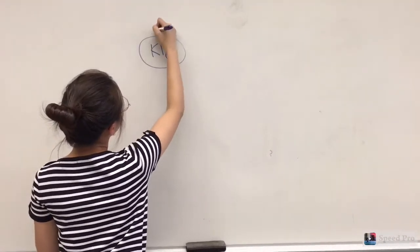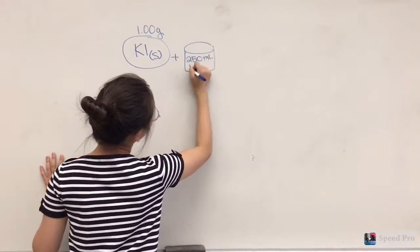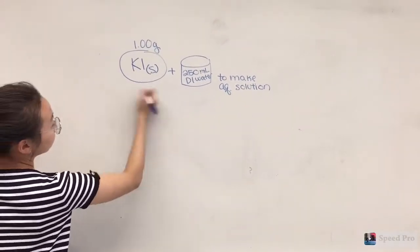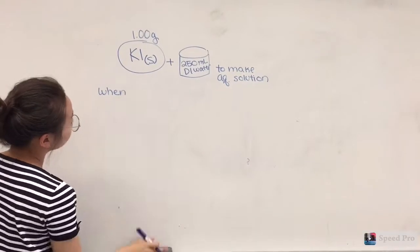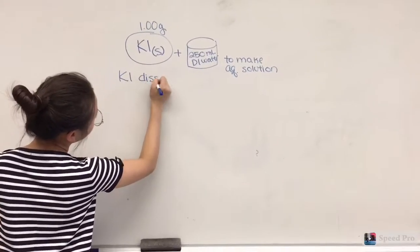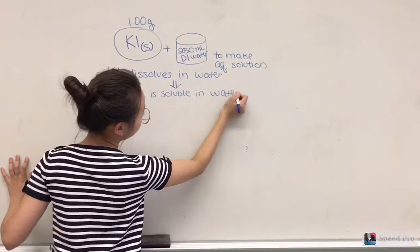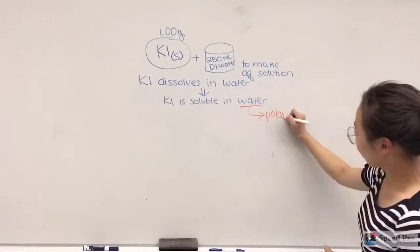In order to create the aqueous solution of potassium iodide, one gram of solid potassium iodide was dissolved in 250 milliliters of water. The potassium iodide was able to dissolve because of the polarity of water, as well as the ionic bonding that occurs between the potassium and iodine molecules.